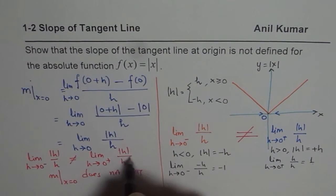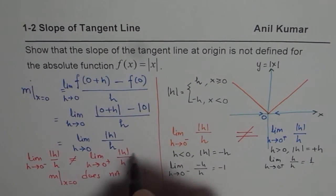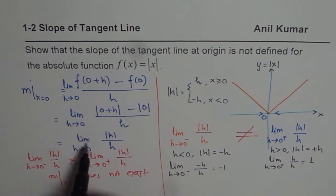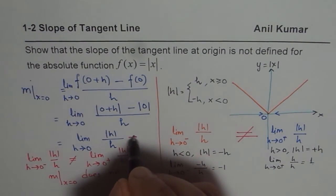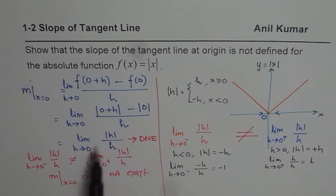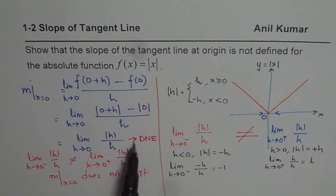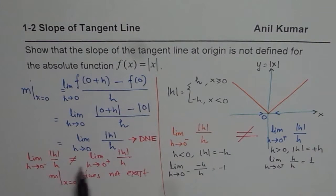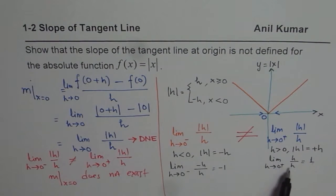Since the limit does not exist — that is, the limit as h → 0 of |h|/h does not exist, because the left-hand limit is not equal to the right-hand limit — the limit from the left side is −1 and the limit from the right side is +1. That is how you prove it using the difference quotient method.